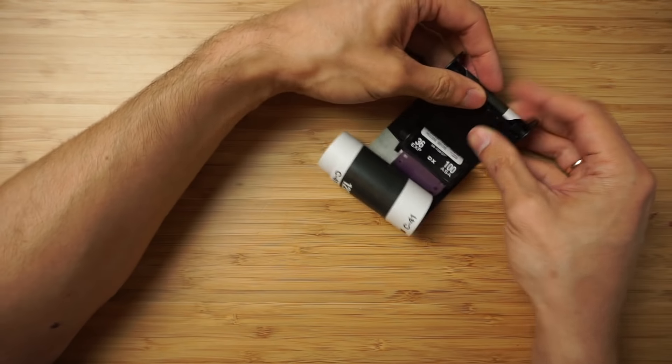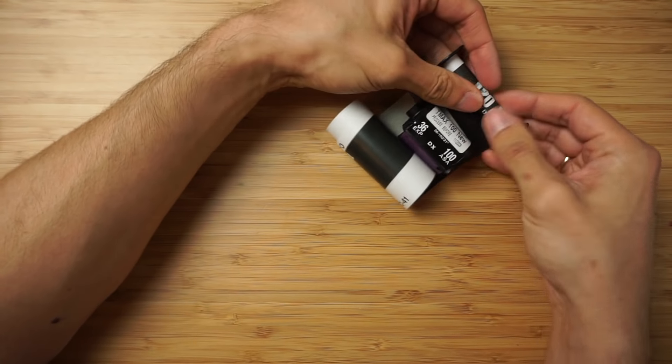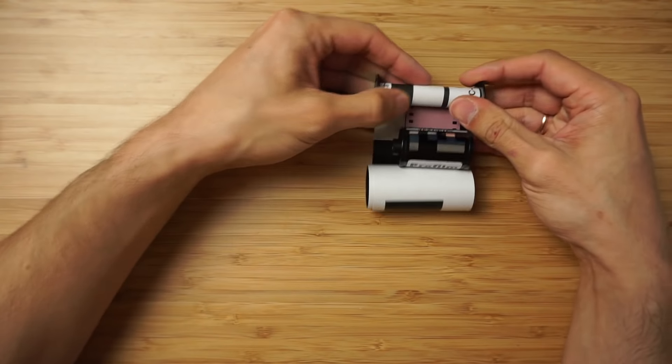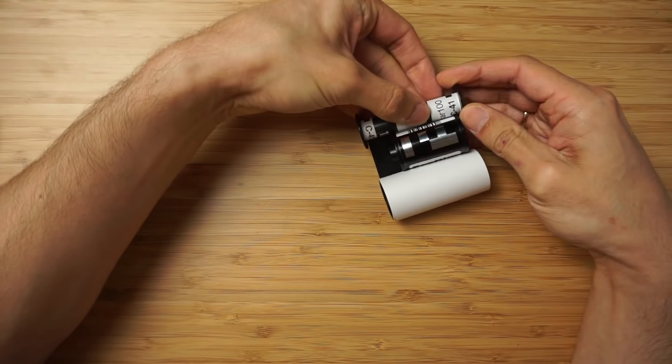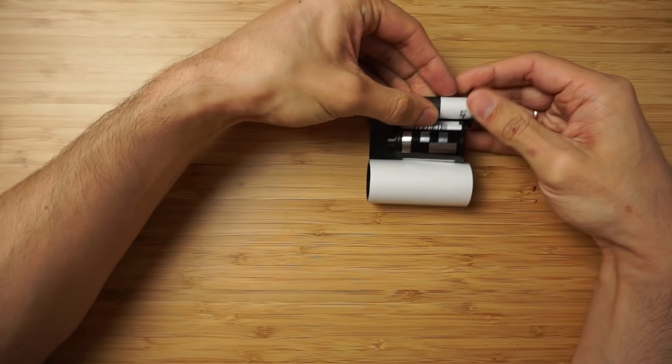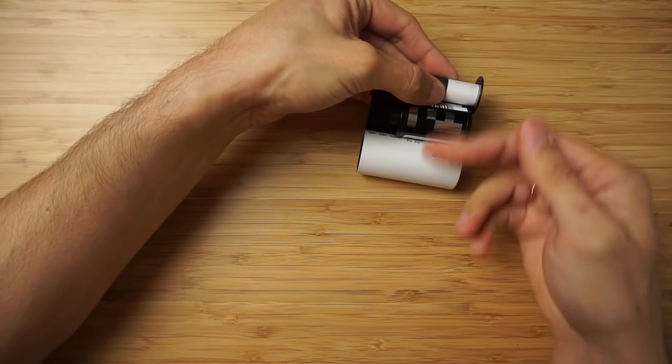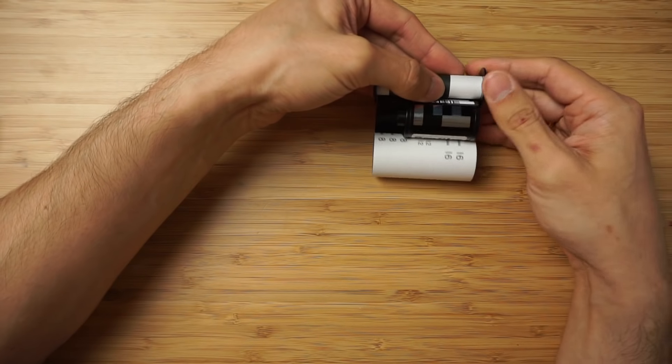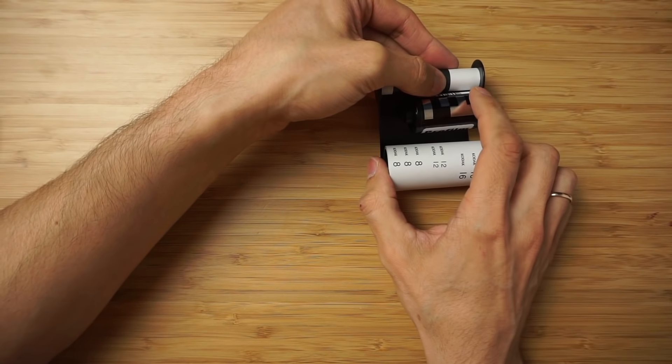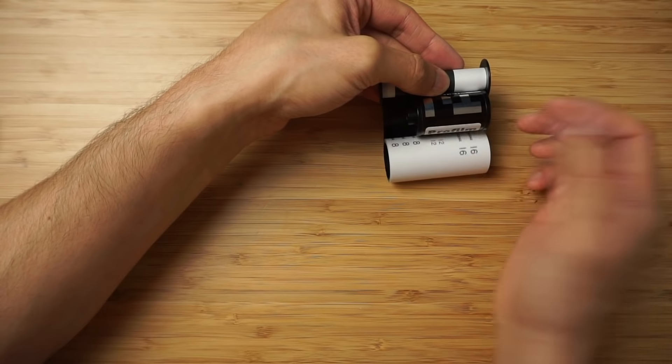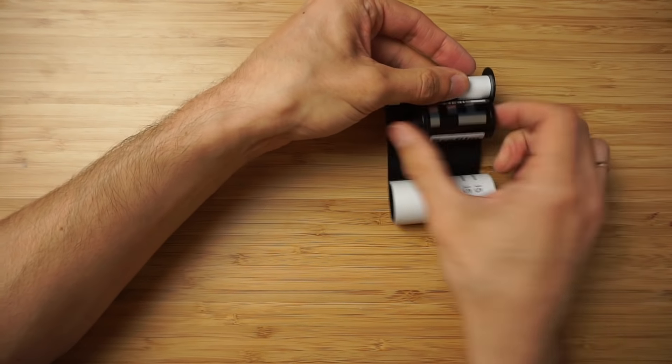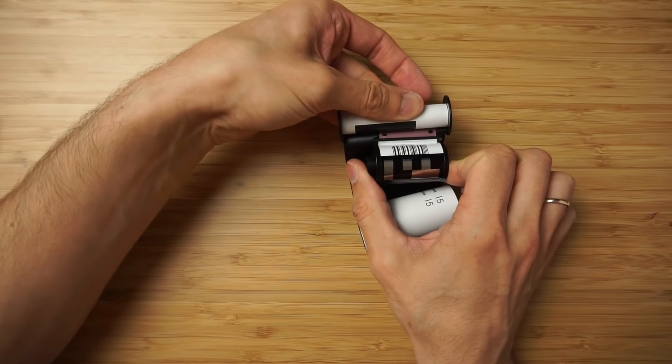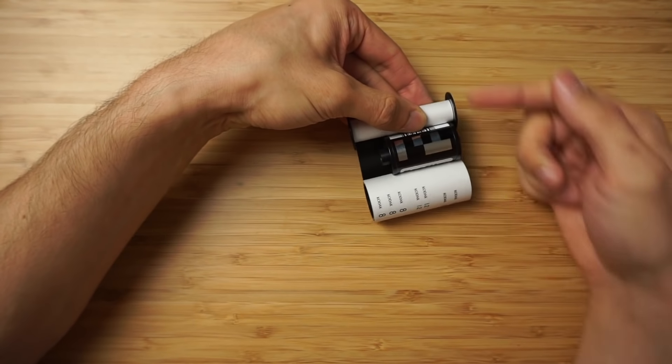Of course you're gonna do this in total darkness. You just wind your film and while you're winding your medium format film, your 35 millimeter film will be getting out of the canister. Then you're gonna wind and wind and wind until you hit the end.